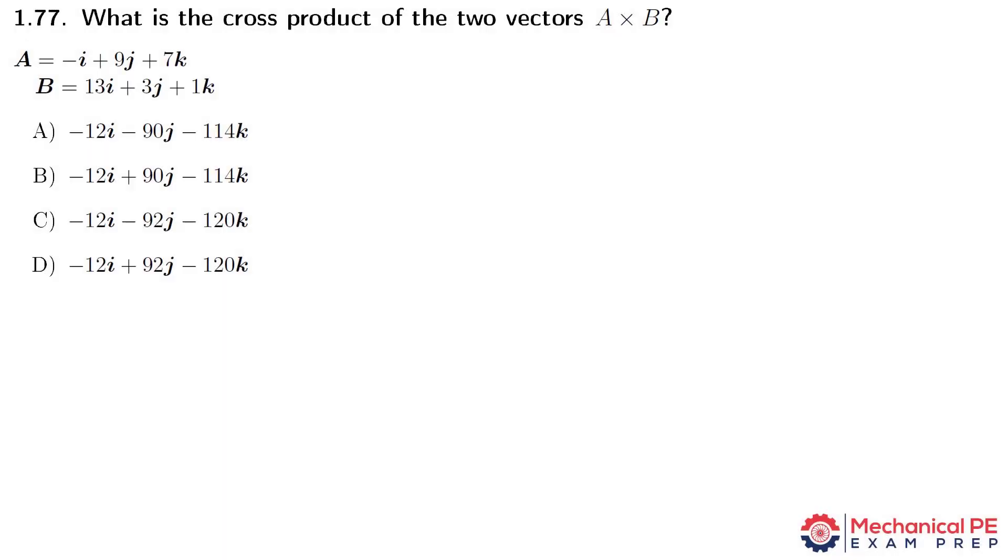What's the cross product of the two vectors A cross B? So there's two types of products that you can take with vectors. There's the dot product, or the scalar product, where you just add everything together and you end up with one number at the end.